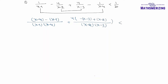This is less than 1/30. When I solve it, x and x will cancel, and I'll get -4 + 1 which is -3. So I get -3/(x² - 5x + 4), and here I'll get plus 4/(x² - 5x + 6), and this is less than 1/30, so this is less than 1/15.